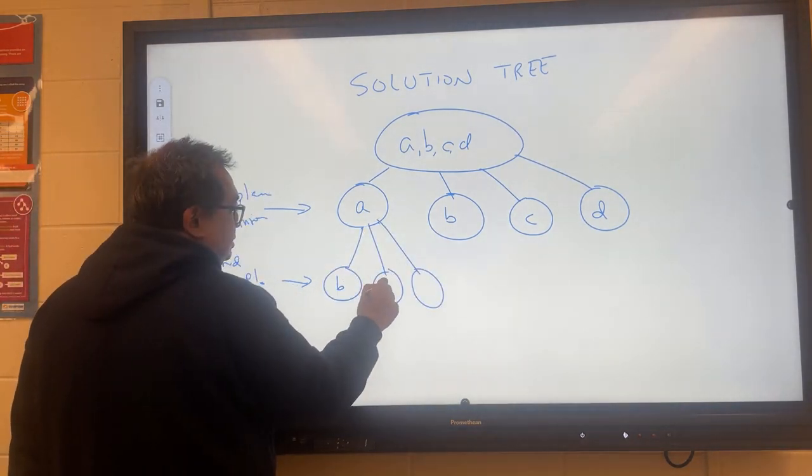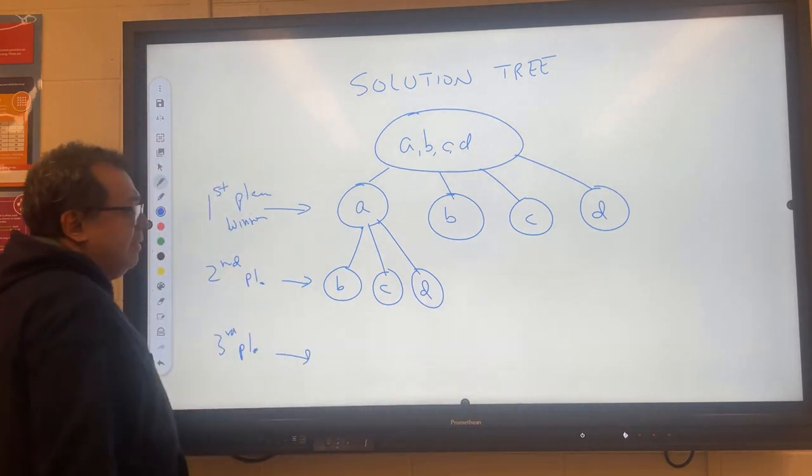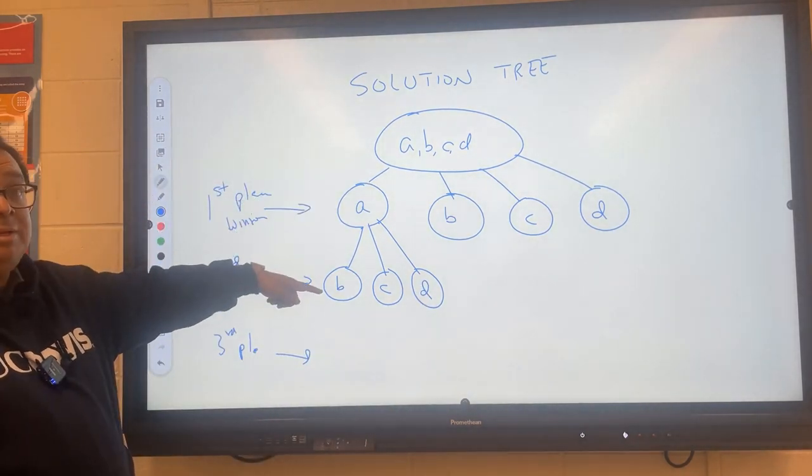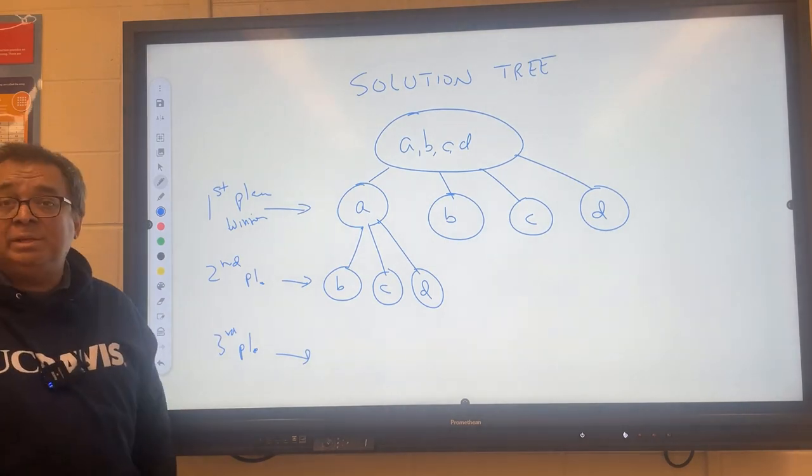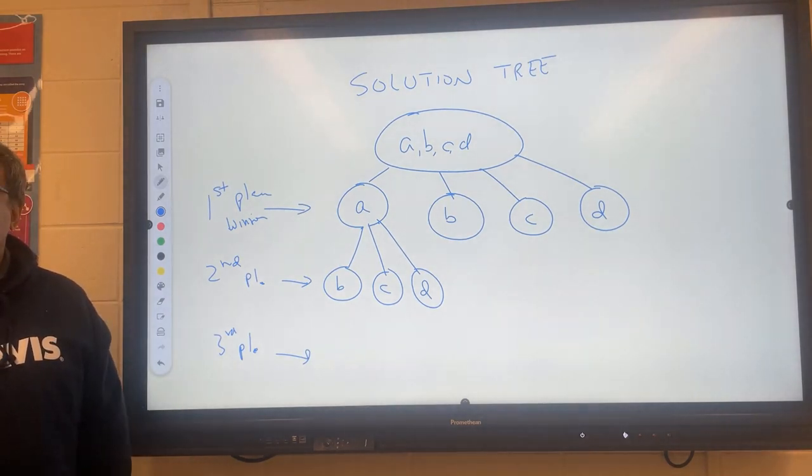They are B, C, and D. And then here, if A has come in first and B has come in second, how many different possibilities are there for third place? Mr. Franovic? C and D. C and D.